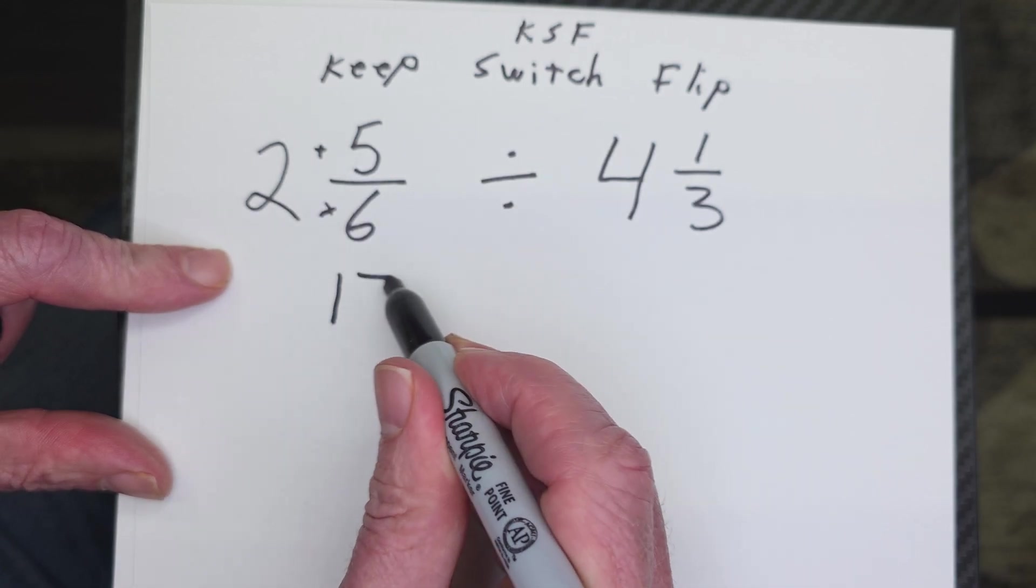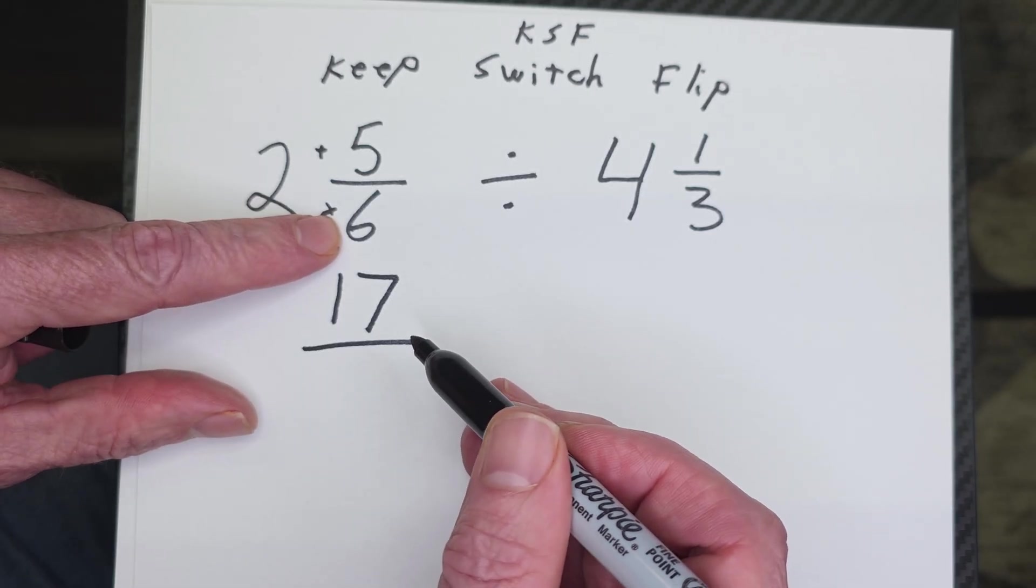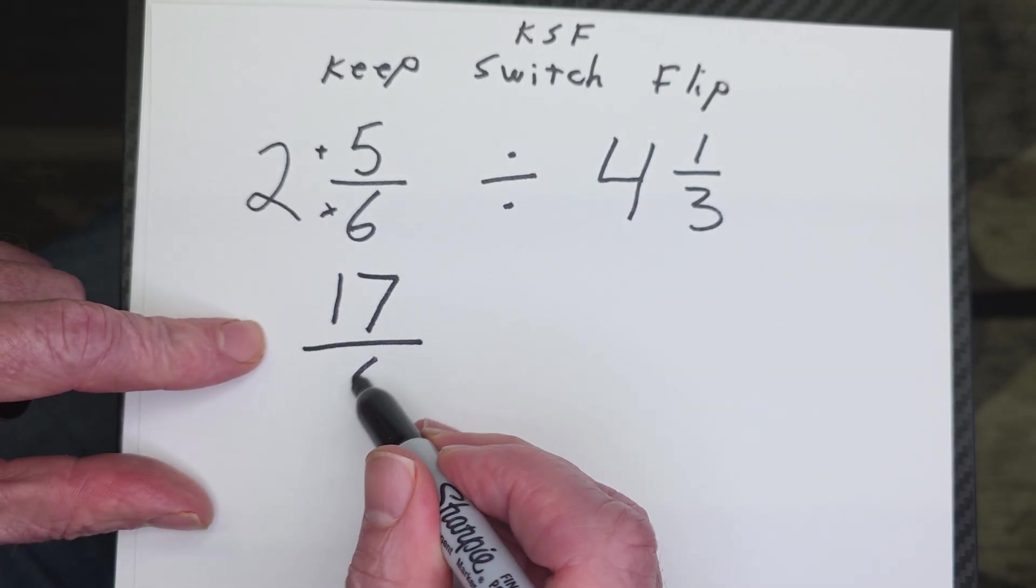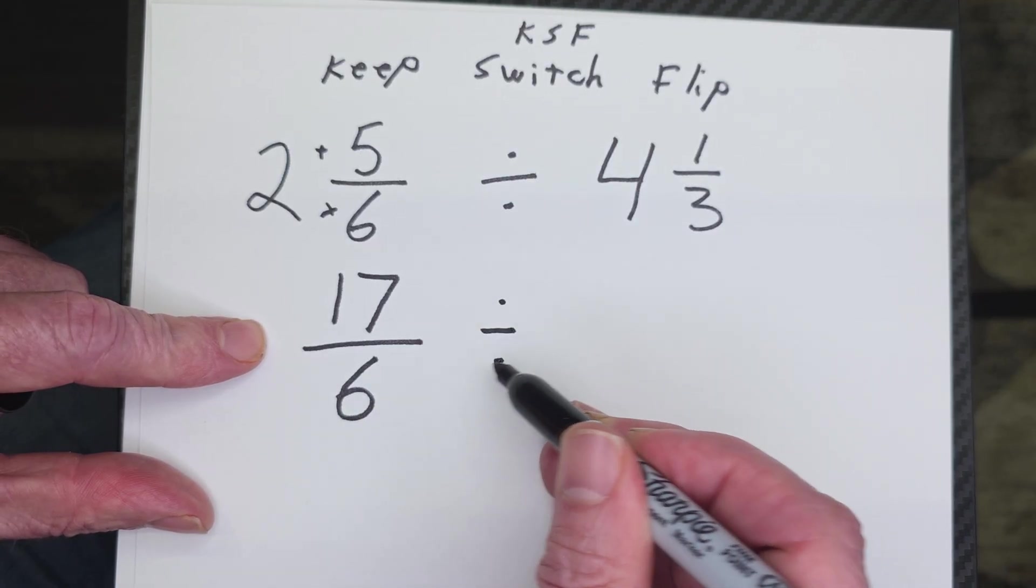So let's go ahead and write 17 right here. And then we're going to keep the same denominator. That is 6. All right, and now we're going to go ahead and put the division symbol right here.